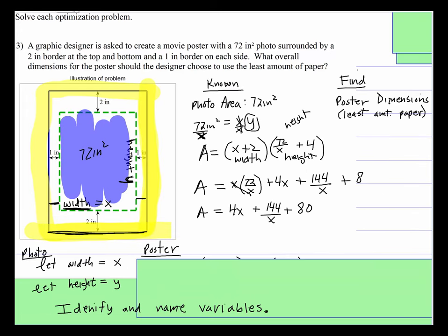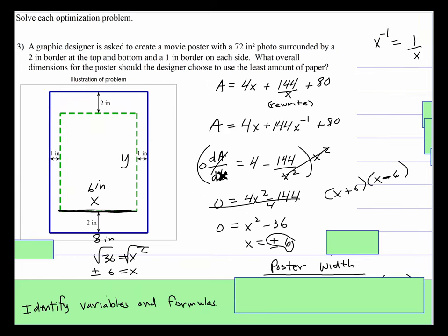Well, then what's the height? Well, remember over here, we found what y is equal to. Y is equal to 72 divided by x.